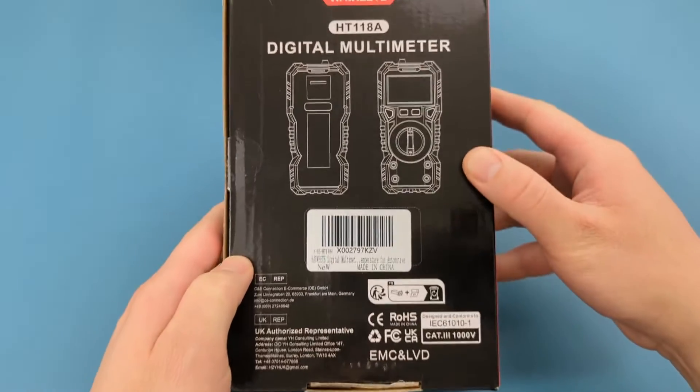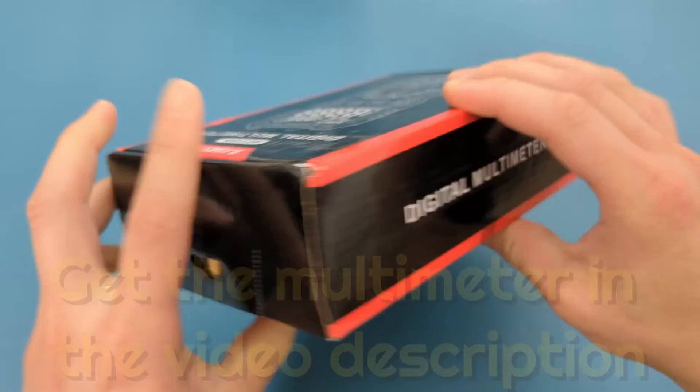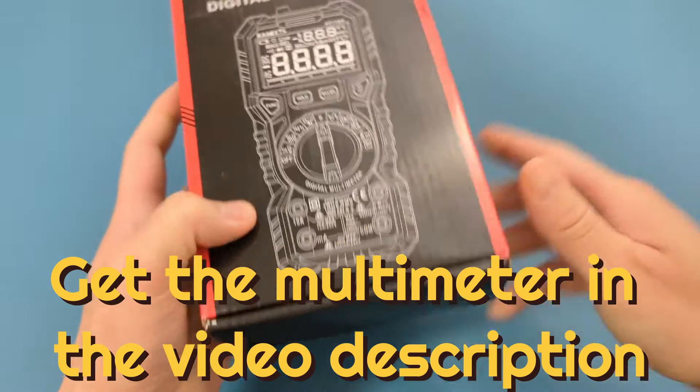This is a digital multimeter, so it uses two AA batteries which are included. You can find the multimeter at the link in the video description.